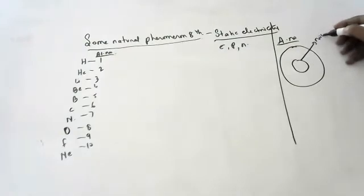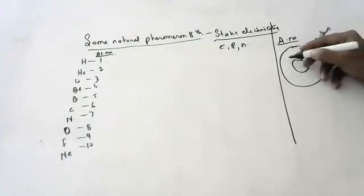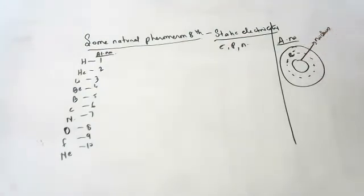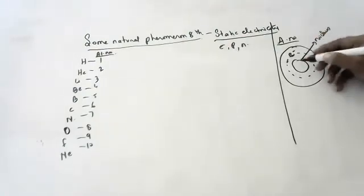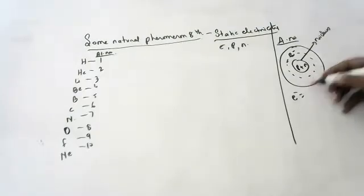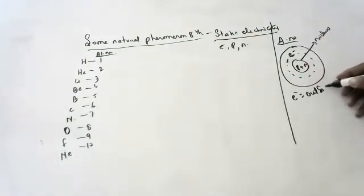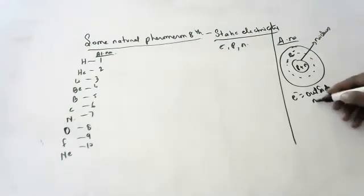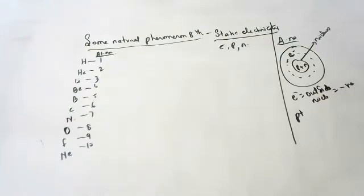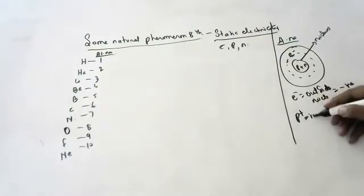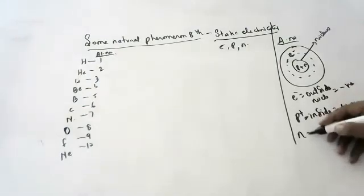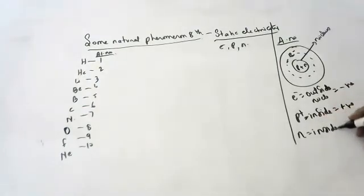Atomic number means — in any atom, in the center you have the nucleus. Surrounding the nucleus there is an orbit, and in this orbit electrons are present outside the nucleus. Protons and neutrons are present inside the nucleus.